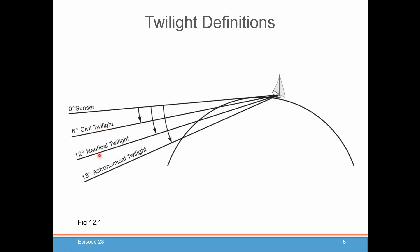How are civil and nautical twilight defined? They're defined basically by where the sun is after it sets or before it rises in the morning. When the sun is certain degrees below the horizon, that is what defines the beginning and end of certain types of twilight.